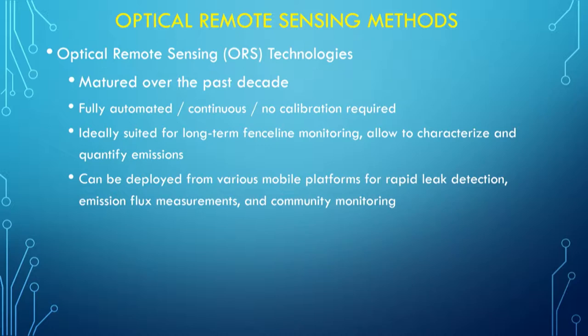To address some of these challenges and demands, one specific type of monitoring is becoming more and more widespread and important — that's optical remote sensing. It has matured quite a bit in the last ten years and allows us to conduct fully automated and continuous measurements without the traditional requirements of calibrating instrumentation. It's ideal for long-term fence line monitoring for a multitude of pollutants simultaneously.